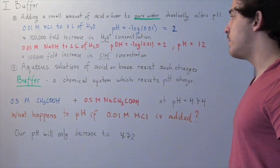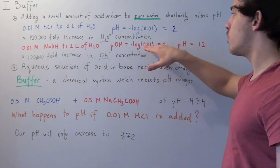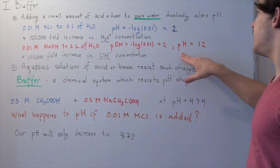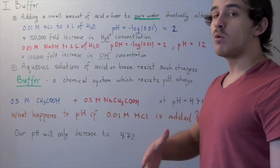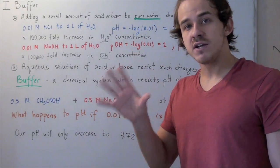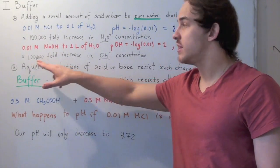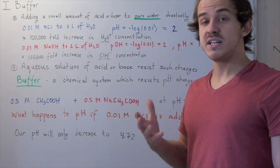First we calculate the pOH, which equals negative log of 0.01, giving us 2. Now we subtract 2 from 14, and we get a pH of 12. That means our pH increases by 5 increments, equivalent to a 100,000-fold increase in hydroxide concentration. That's a very big increase in pH.